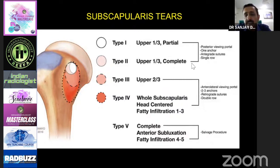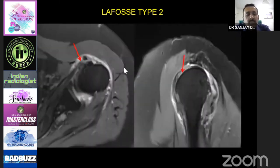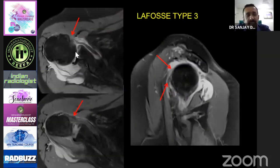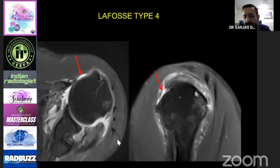This is an example of Lafosse type 1 — partial thickness tear involving only the upper portion of the subscapularis. Type 2 is full thickness tear involving only the upper portion. This is type 3, involving almost upper two-thirds with the lower portion still intact. Type 4 shows a complete superior-to-inferior entire subscapularis tear, causing the humerus to sublux anteriorly. In infraspinatus tears, the humeral head subluxates posteriorly.